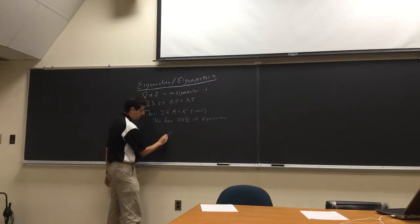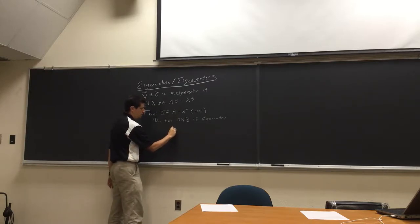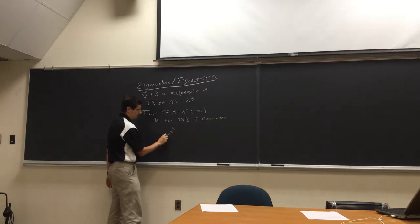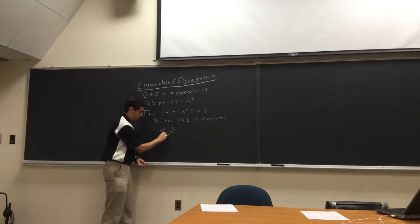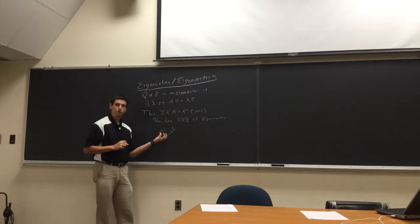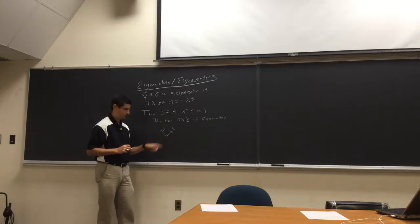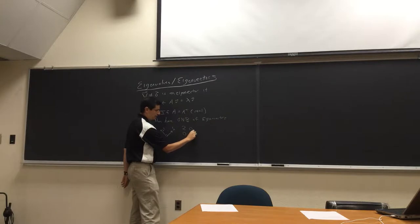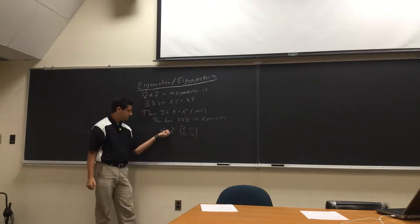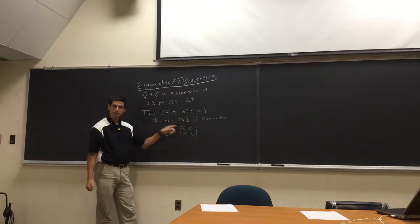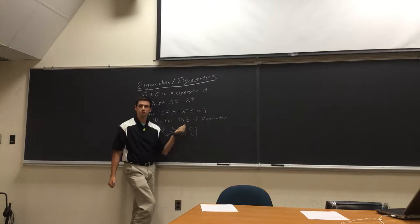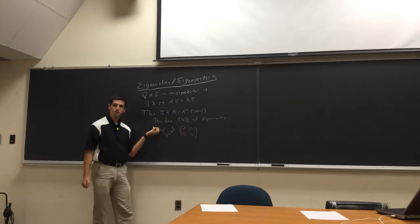Imagine I tell you any vector in this direction, when I apply A, increases by a factor of two; and anything in this direction decreases by a factor of one-half. If I were to write this down in a basis where these are my two directions, the matrix would be [2, 0; 0, 1/2]. I can write any vector as a linear combination of these two. This is the right basis for this problem.